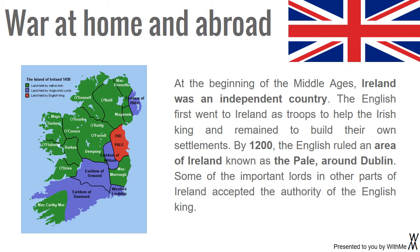At the beginning of the Middle Ages, Ireland was an independent country. The English first went to Ireland as troops to help the Irish king, and remained to build their own settlements. By 1200, the English ruled an area of Ireland known as the Pale, around Dublin. Some of the important lords in other parts of Ireland accepted the authority of the English king.